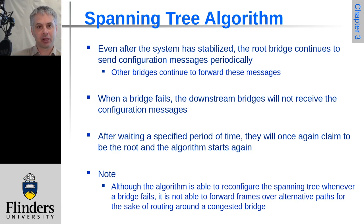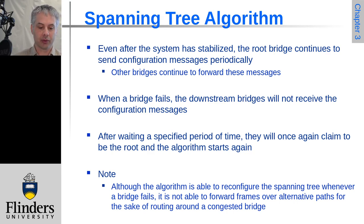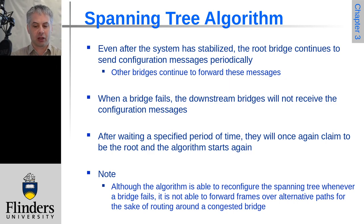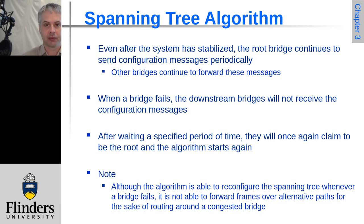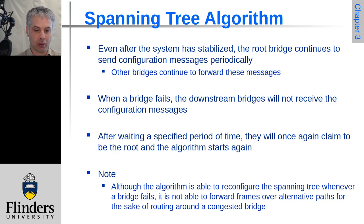This means that even if a particular bridge fails, the spanning tree will self-heal and communications will continue to work. However, this does not bypass congestion, and multiple links are not simultaneously used. It's purely about ensuring there is a path between every node and every network segment on the network.